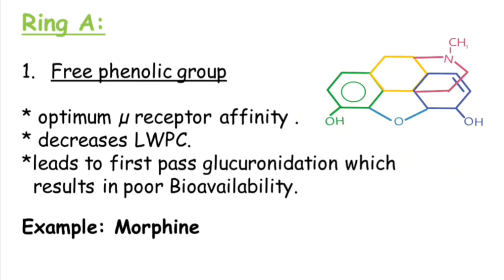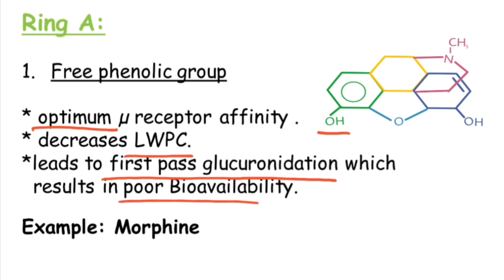Let us start with Ring A. The first point is the free phenolic group. Having a free phenolic group at C3 position gives optimum mu receptor affinity, decreases LogP (lipid-water partition coefficient), and leads to first-pass glucuronidation, which results in poor bioavailability. An example is Morphine, which has a free phenolic group at C3 position.